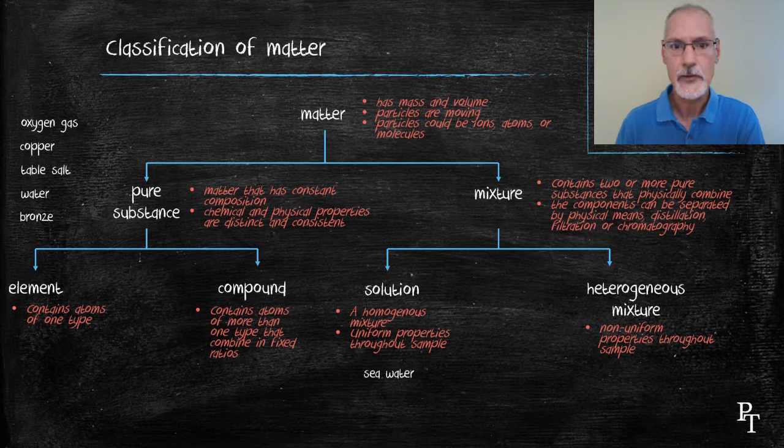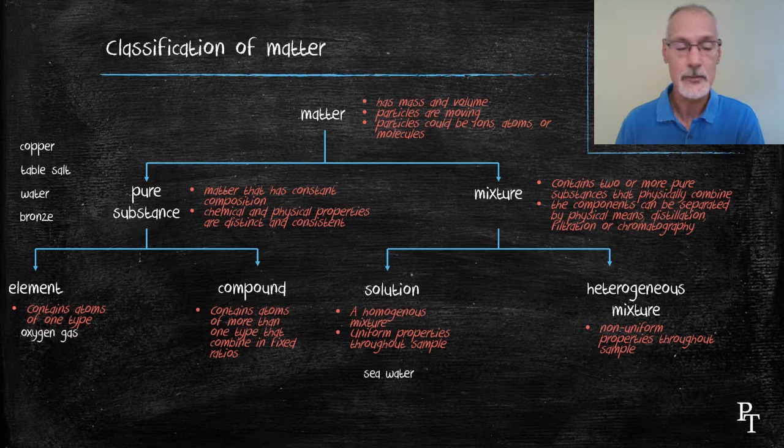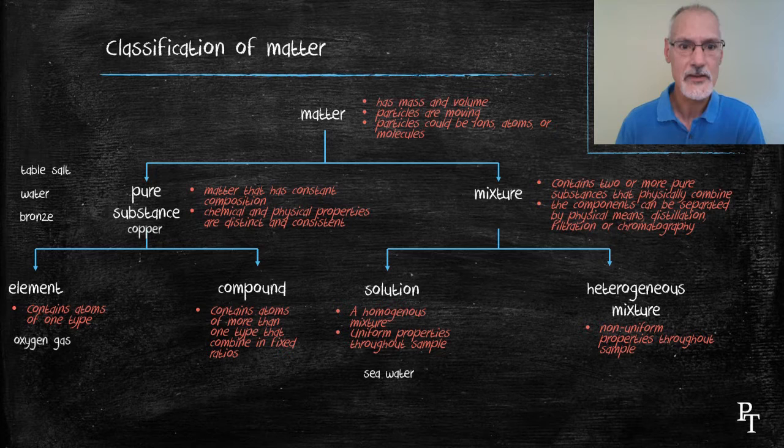Oxygen gas, O2, essentially is made of only one type of atom, so it would be a pure substance and an element. A sample of copper is made of only individual copper atoms all joined together in a lattice.